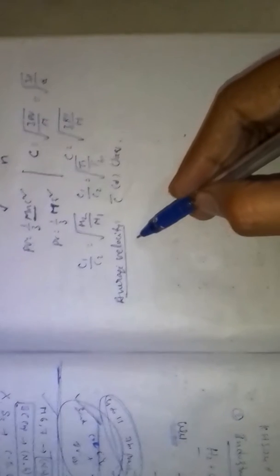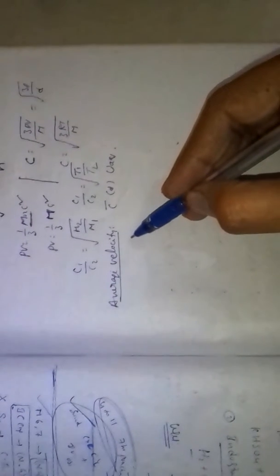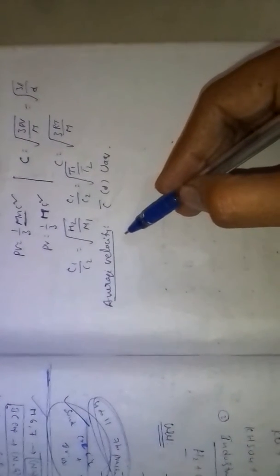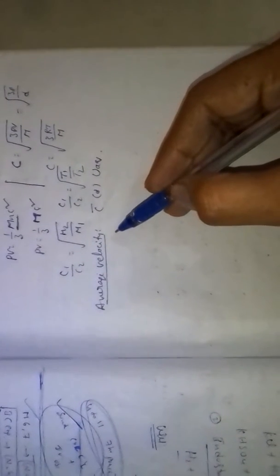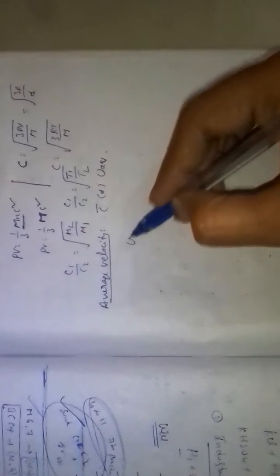Average velocity is denoted by C-bar or U-average. It is defined as the sum of the velocities of individual gas molecules divided by the total number of molecules present, giving the average velocity: u1 plus u2 plus u3 and so on up to un, divided by n.